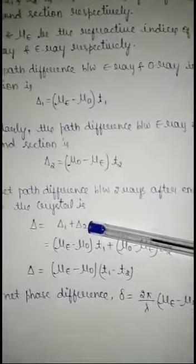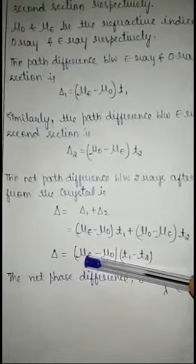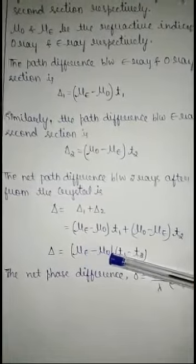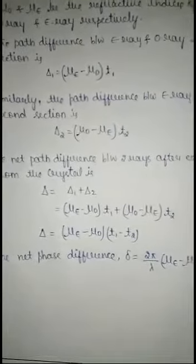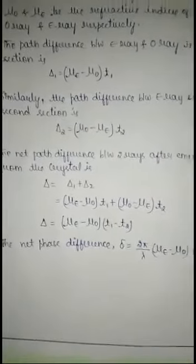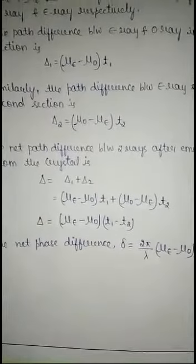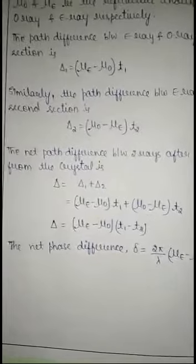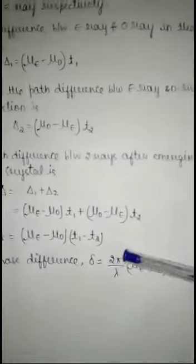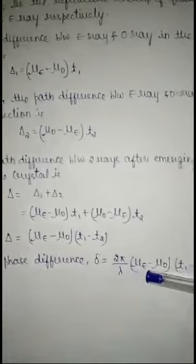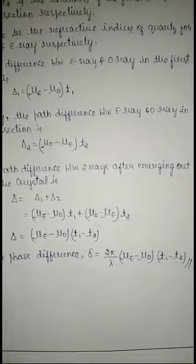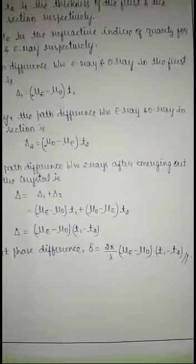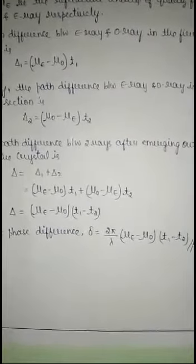Substituting the values of δ1 and δ2 and simplifying, we get the net path difference δ = (μE − μO)(T1 − T2). The phase difference is given by (2π/λ) times the path difference, so the net phase difference is (2π/λ)(μE − μO)(T1 − T2). Thus, any desired value of phase difference can be obtained between the ordinary ray and the extraordinary ray.